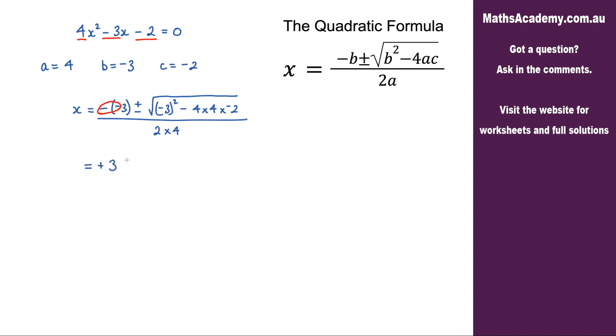We've got 3 plus or minus the square root. Negative 3 squared is 9. I've got this negative here and this one, so it's going to be a positive. We've then got 4 multiplied by 4 is 16, and then the 2 is 32. That is all over 2 multiplied by 4, which is 8.